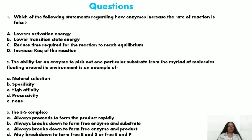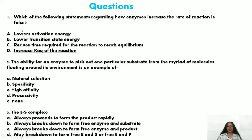We have studied a great deal and it is time to discuss practice questions. Question one: Which of the following statements regarding how enzymes increase the rate of reaction is false? Options include: enzyme lowers activation energy, enzyme lowers transition state energy, enzyme reduces time required for the reaction to reach equilibrium, or enzyme increases the equilibrium constant K_eq. The false statement is the fourth option — enzymes do not increase K_eq.